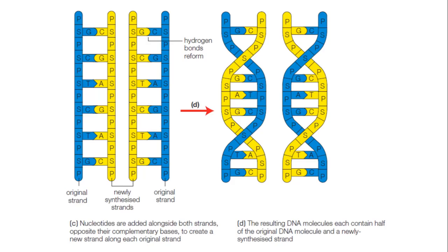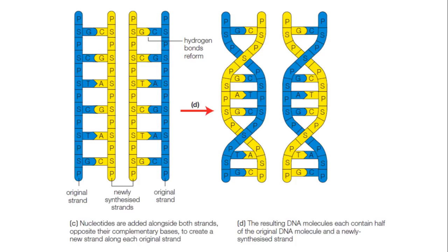Here we have the newly synthesized strands made up of nucleotides from that nucleotide pool. This results in two identical DNA molecules that each contain half of the original DNA molecule and a newly synthesized strand, which we call the daughter strand.